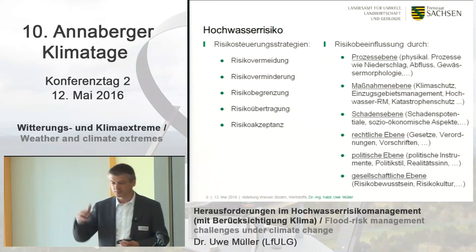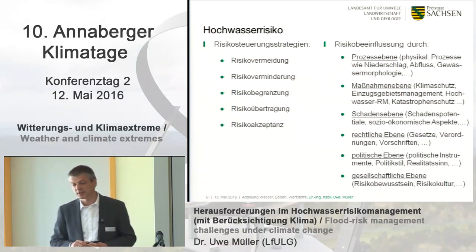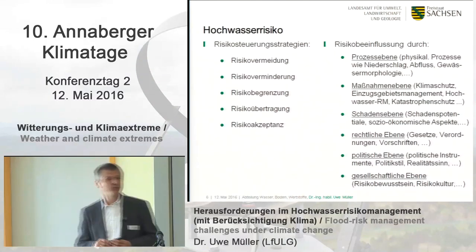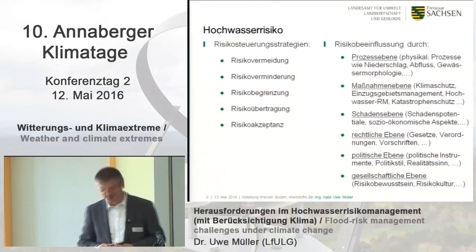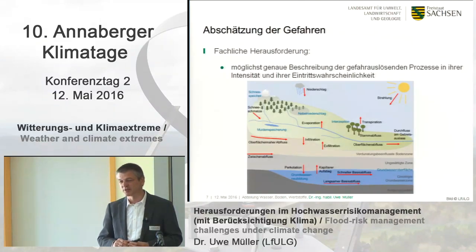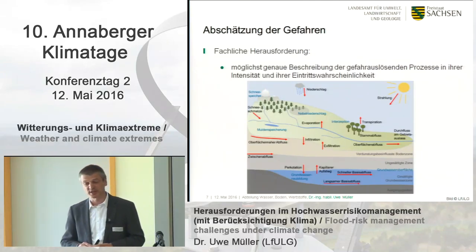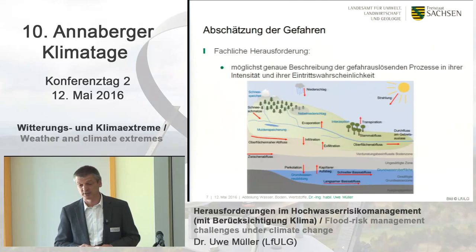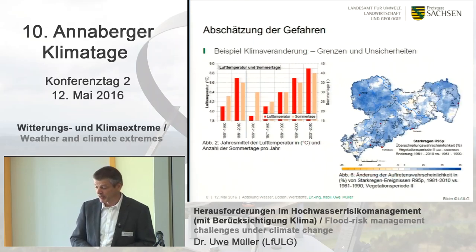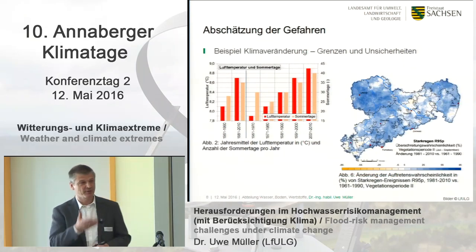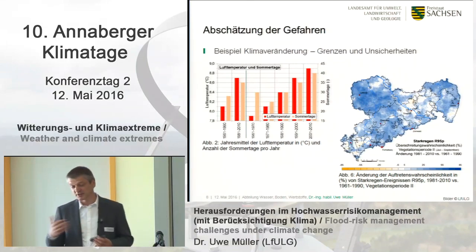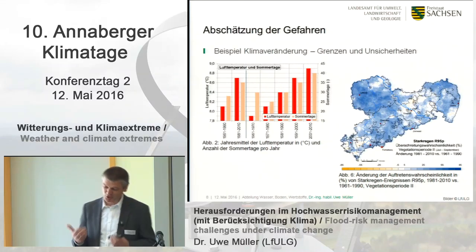You have influence on risk on many levels. At the process level, you look into physical processes and need very precise input data in order to tell people exactly what they need — so you can sleep well during the night. You need a good description of processes in terms of intensity, probability of occurrence, and the water balance cycle, which is of course a complex thing. I'll show you two charts from our office.